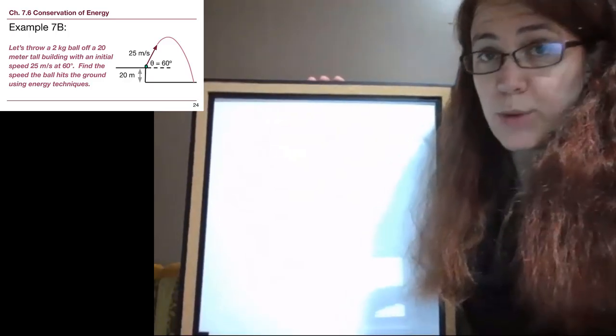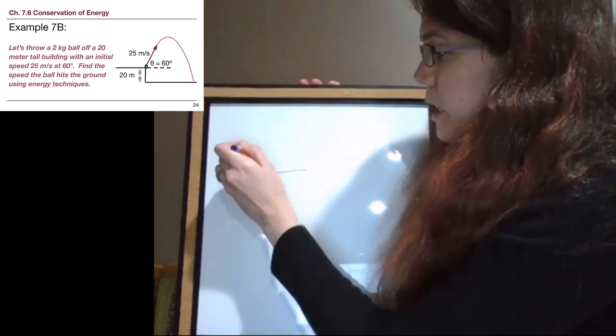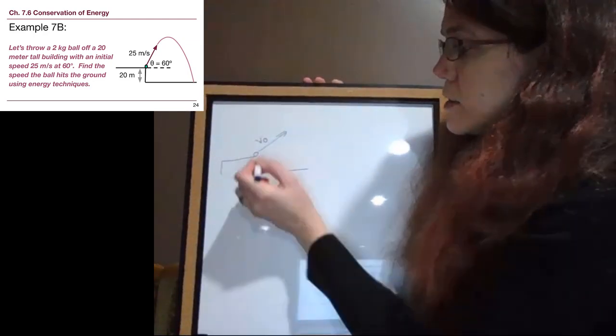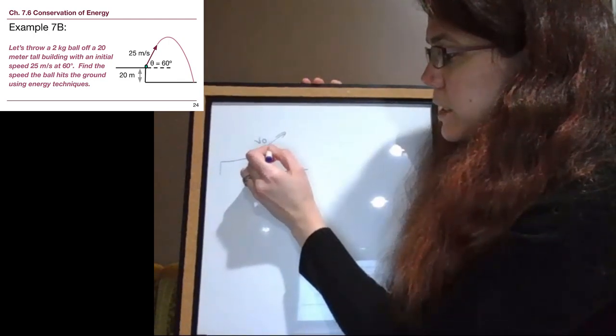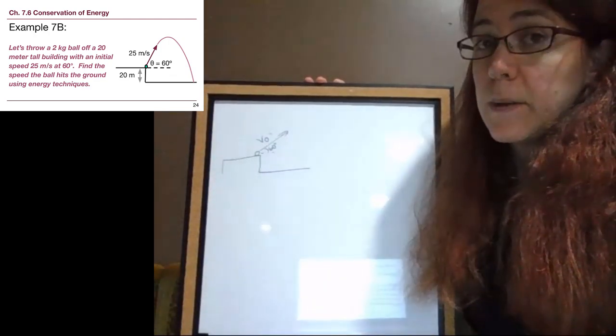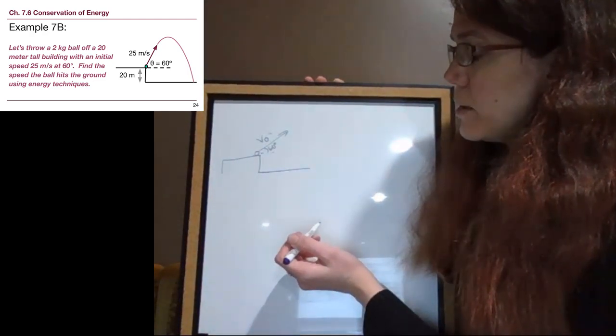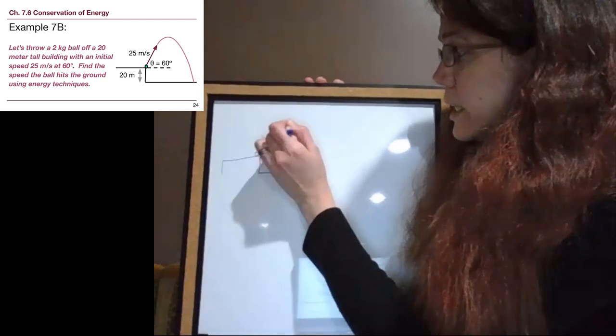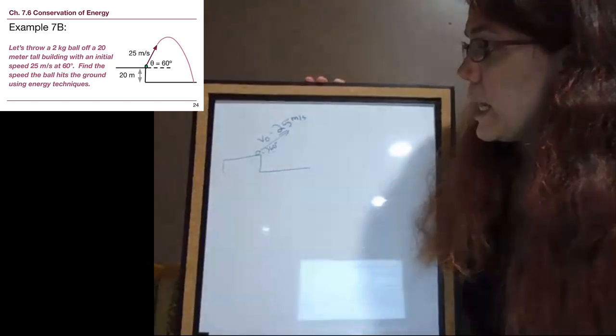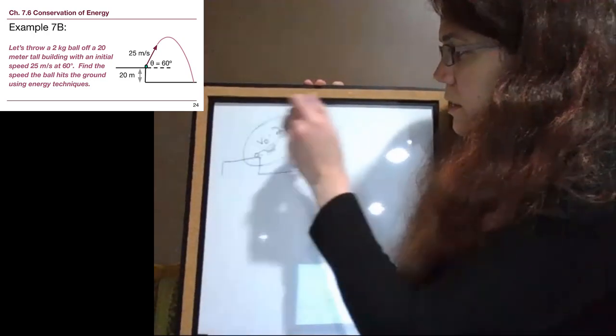So as with any problem that we do, the first thing we probably want to do is draw a picture of the situation. So we have our ball being shot off with an initial velocity. Although there is that 60 degree angle, that's probably not going to mean anything to us if we start to realize that energy problems are not using vectors. So we have that initial velocity is 25 meters per second. And so we can have that be our initial beginning part of the problem. So this is our before.